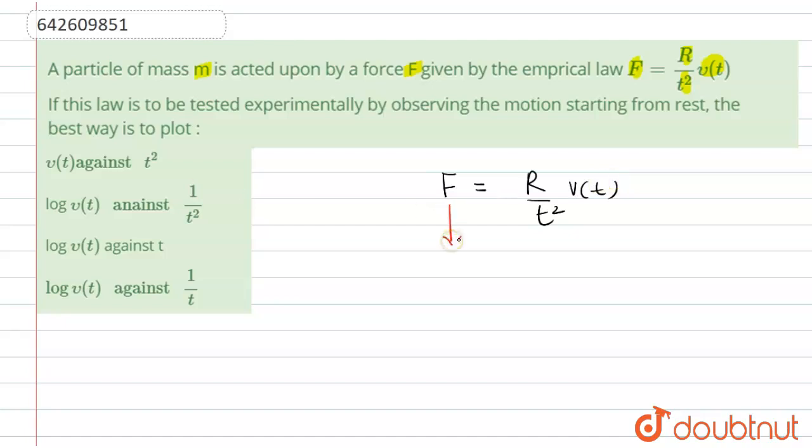according to Newton's second law of motion, we can write this force as M dV upon dt, M into acceleration, and acceleration is rate of change of velocity T. So we wrote the value of acceleration as dV upon dt. Now R upon T square V of T.